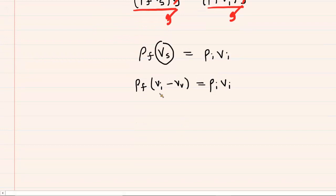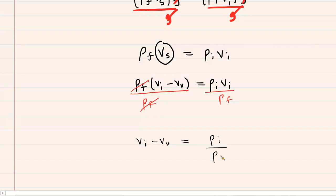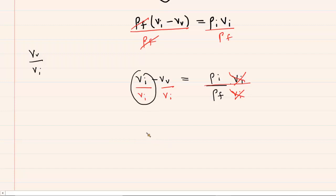Next, we divide both sides by the density of the fluid, canceling it on the left side. This gives us V sub I minus V sub V on the left, equal to the density of the iceberg divided by the density of the fluid, multiplied by V sub I. We then divide each term by V sub I, which causes the V sub I terms to cancel on the right, leaving us with 1 minus V sub V over V sub I equal to the ratio of the densities.